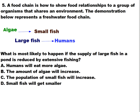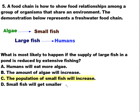Question five: a food chain shows food relationships in a group of organisms sharing an environment. This freshwater food chain is: algae → small fish → large fish → human. Small fish consume algae and humans consume large fish. What is most likely to happen if the supply of large fish in a pond is reduced by extensive fishing? A: humans will eat more algae, B: the amount of algae will increase, C: the population of small fish will increase, or D: the small fish will get smaller. The answer is letter C — the population of small fish will increase, because there are no large fish eating the small fish.